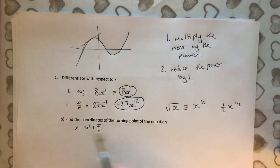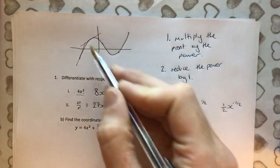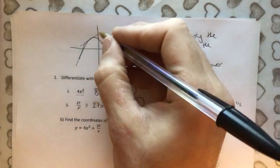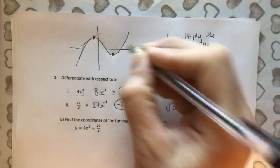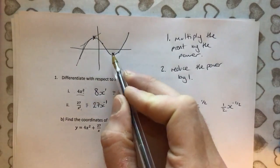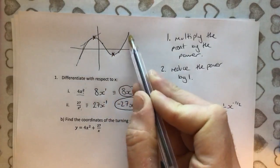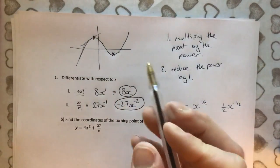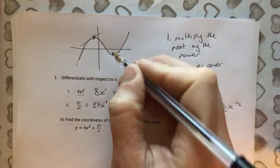And then part b puts it all together because it says, find the coordinates of the turning point of the equation. What on earth does that mean? Well, let's look back at our general curve up here. There were two turning points here. This one just there and this one here. At the top of this mountain and the bottom of this valley.